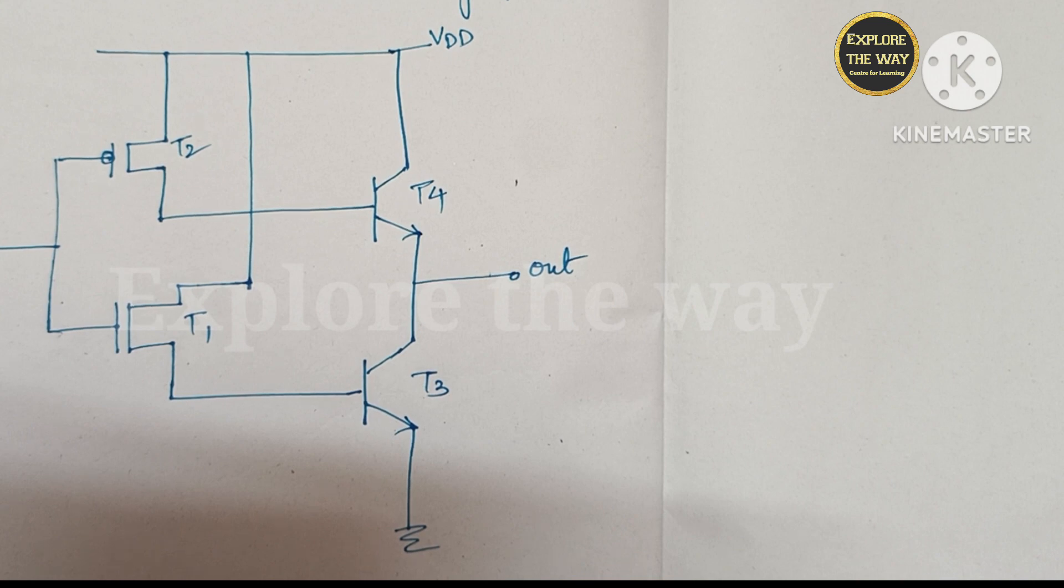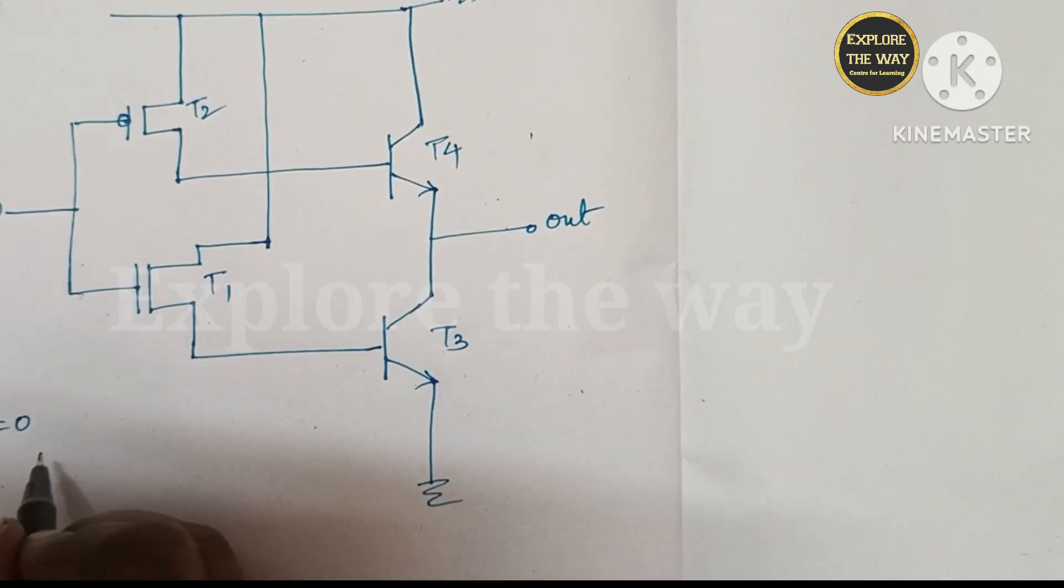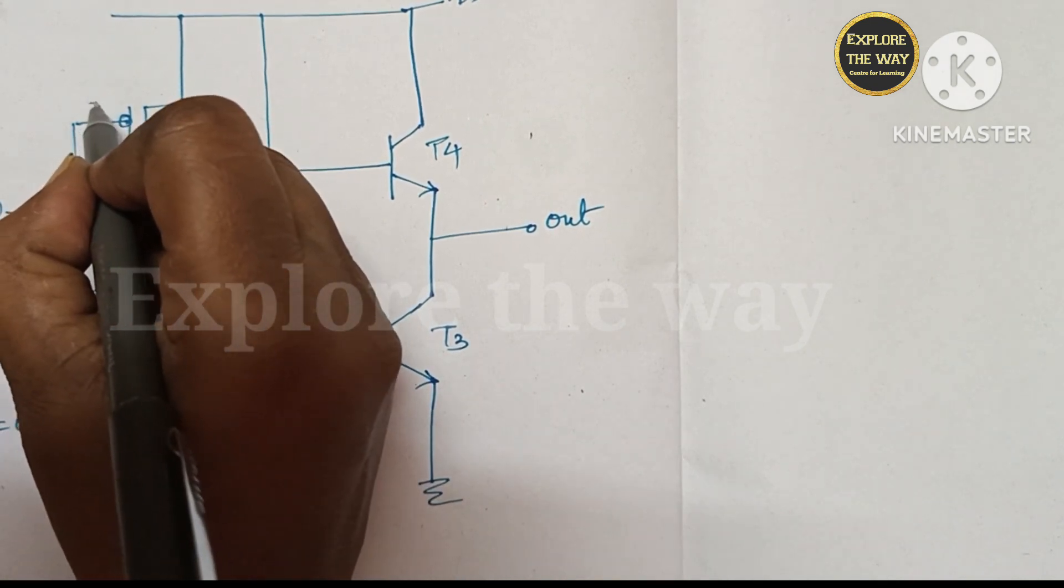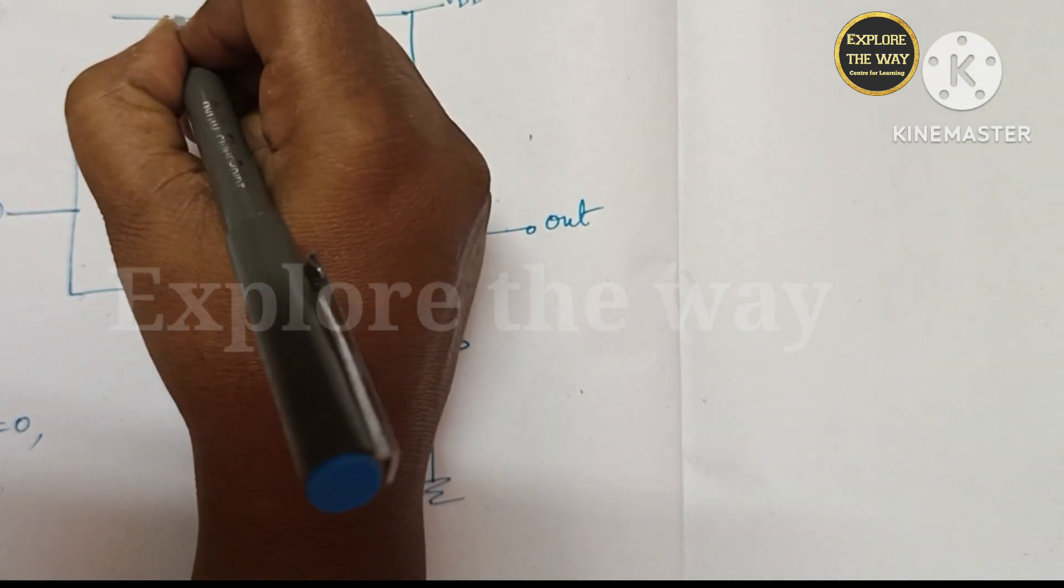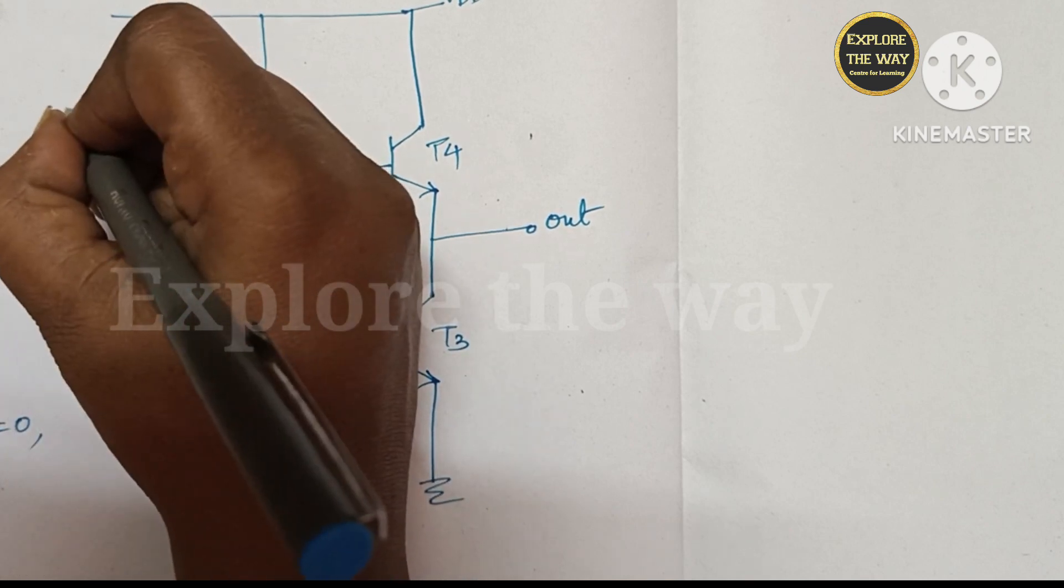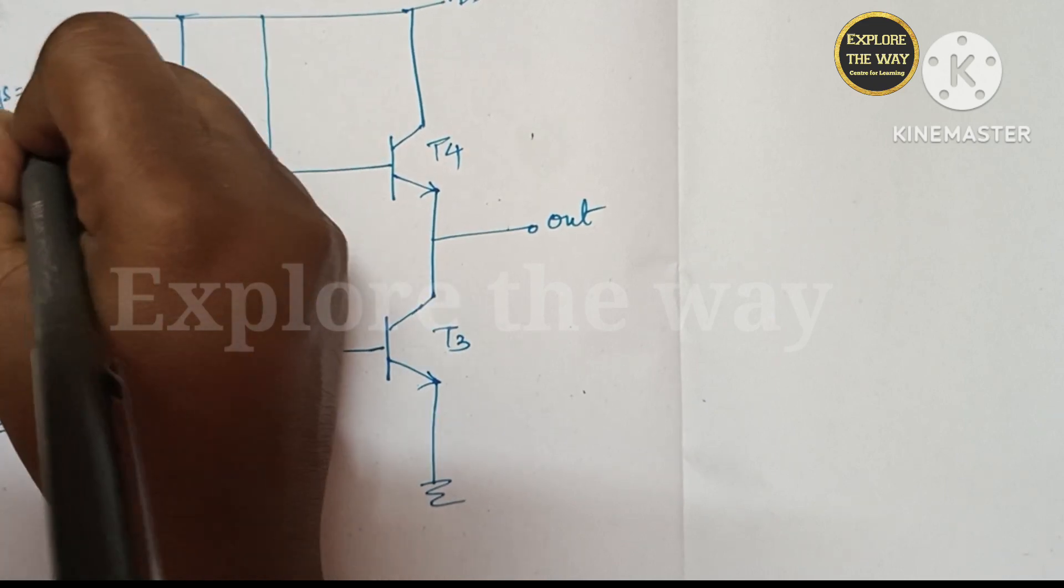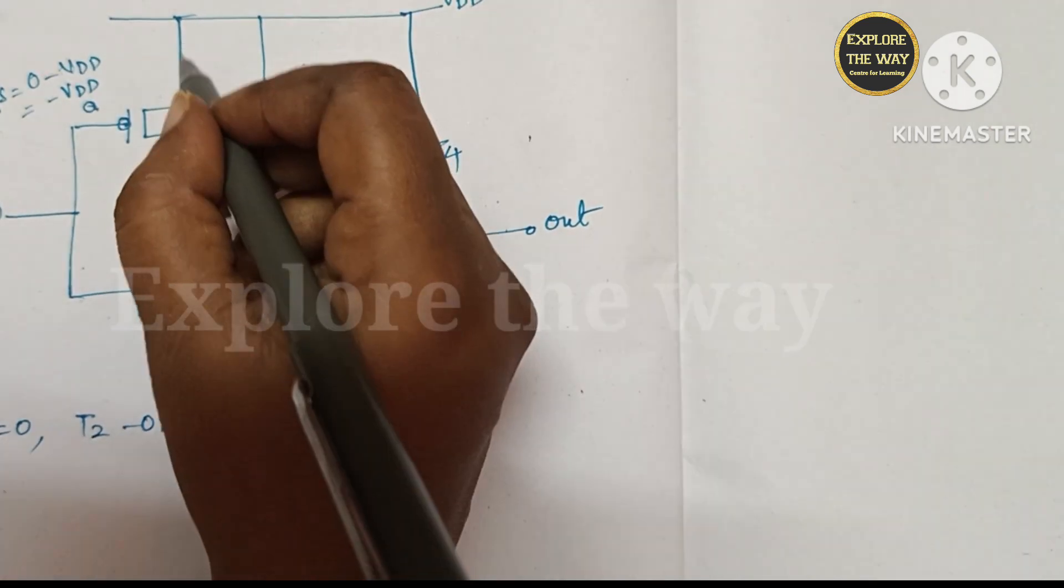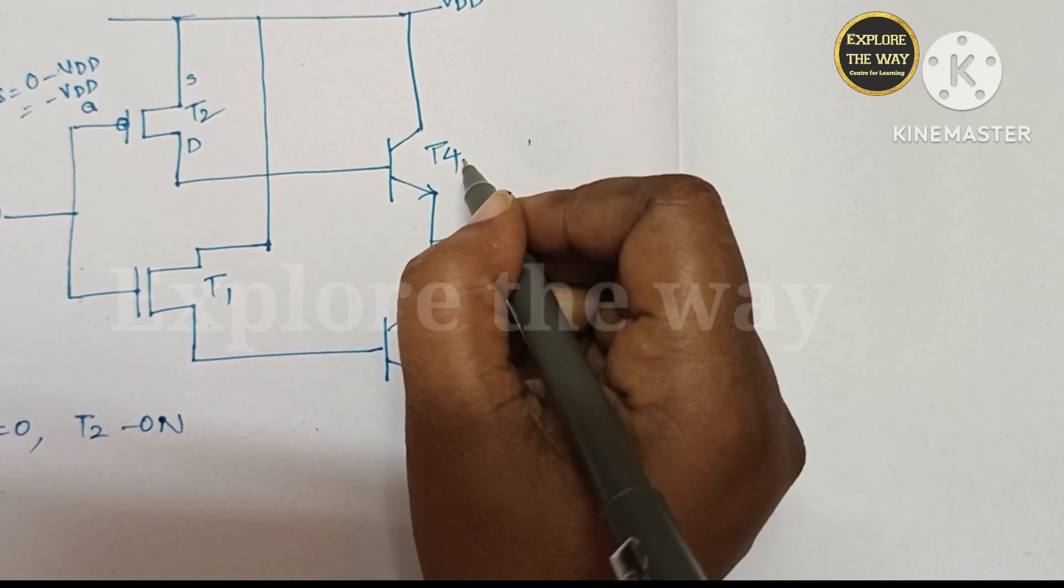Let us see the operation of this BiCMOS inverter. Firstly, when the input is 0, what will happen? Here the input is at the gate which is 0 and the source is at VDD. So VGS for this PMOS transistor is 0 minus VDD, which is equal to negative. So this PMOS transistor will turn on, which drives this bipolar transistor T4. So this T4 also enters into conduction.